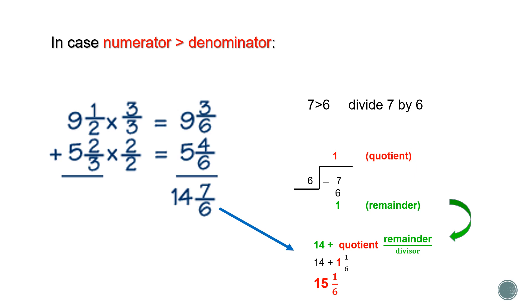But notice here that 7, which is the numerator, is greater than 6, which is the denominator. In this case, divide 7 by 6 since 7 is greater than 6. The division equation is in front of you here. By dividing 7 by 6, you get 1 as quotient and 1 as remainder.